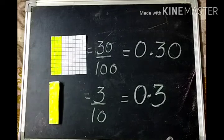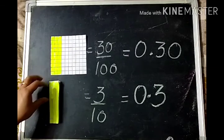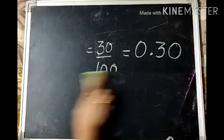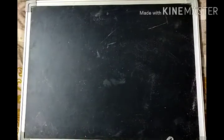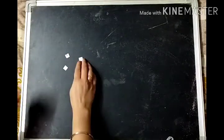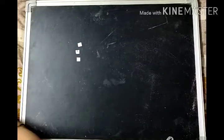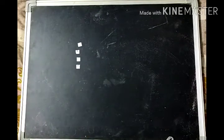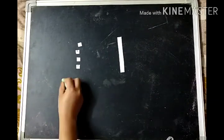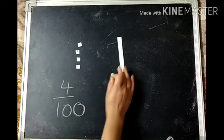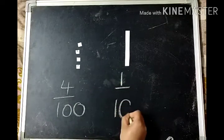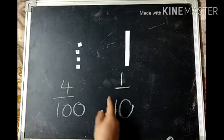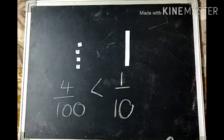Both of them are equal — only the piece size differs. So if we have to compare: these are four hundredths, and this is one tenth. So these are four hundredths and these are one tenth. Which do you think is the bigger size? One tenth is the bigger piece size.